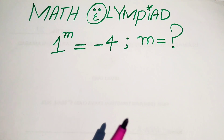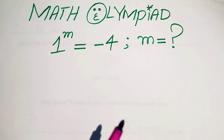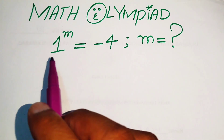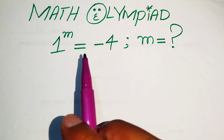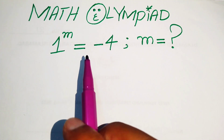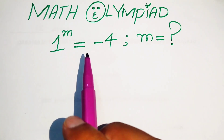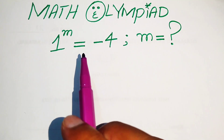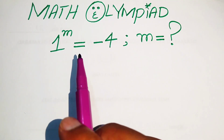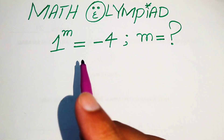Hello everyone, welcome. We solve this algebra problem where 1 to the power of m equals minus 4, and we solve for the values of m.